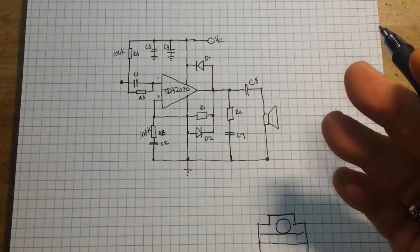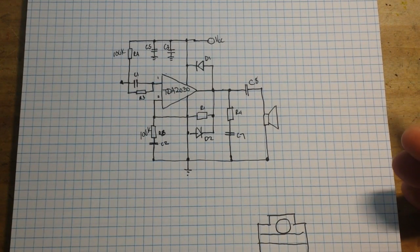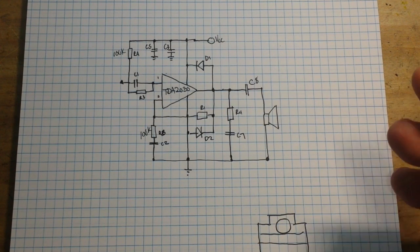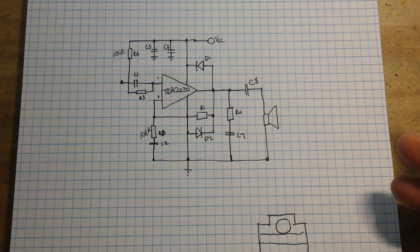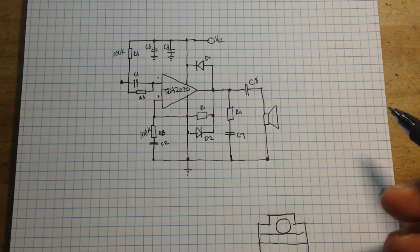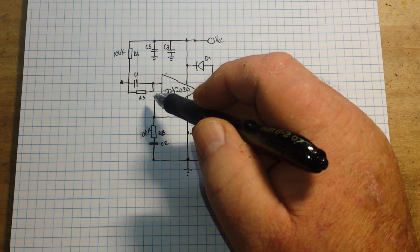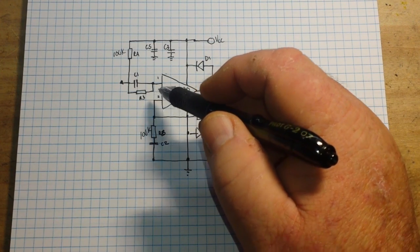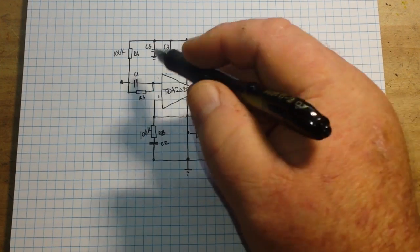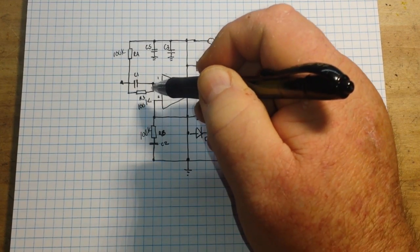Now if you go higher than that, you're going to have poor frequency attenuation. And if you go lower than that, you could end up getting into some sort of oscillation. Next up we have R3, and this is our non-inverting input bias as well, so it's also going to be 100k.